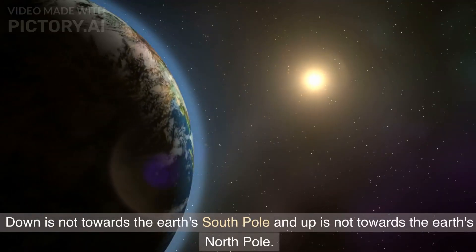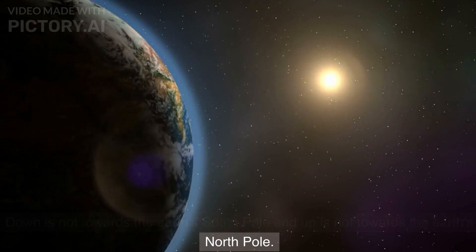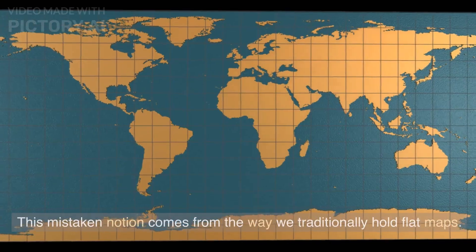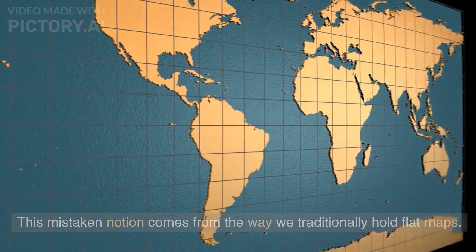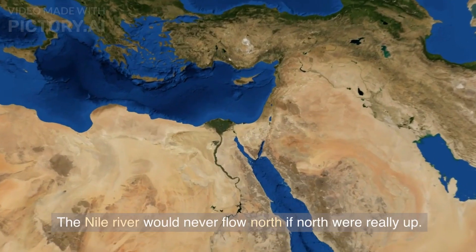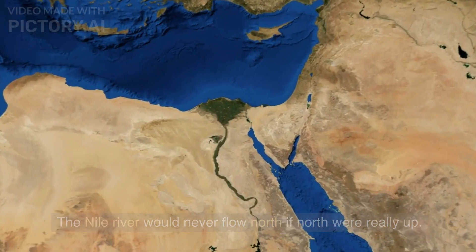Down is not towards the Earth's south pole and up is not towards the Earth's north pole. This mistaken notion comes from the way we traditionally hold flat maps. The Nile River would never flow north if north were really up.